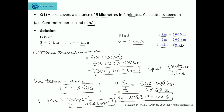This is how we calculate speed after converting the units. In case there is no problem with the decimal, you can leave the answer up to two decimal places. But in case they ask you to round off, then you can give 2083 cm per second as the final answer.